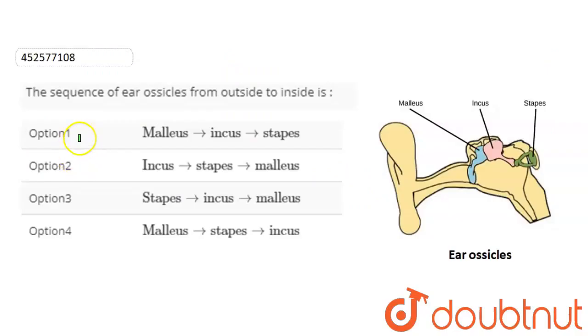Hello students, let's start the question. The question here is: The sequence of ear ossicles from outside to inside is?